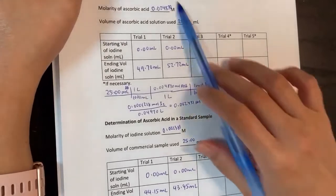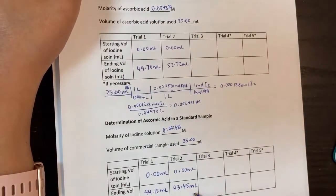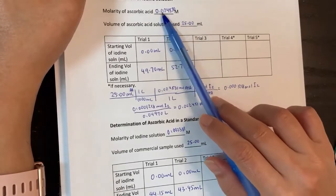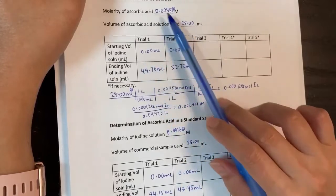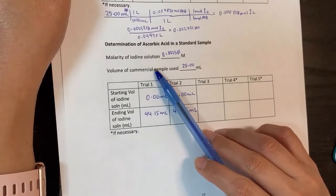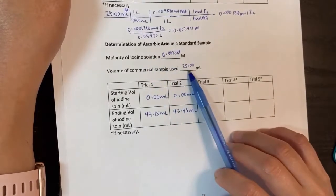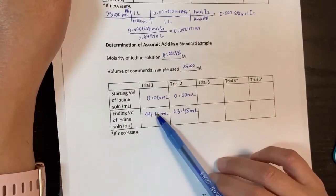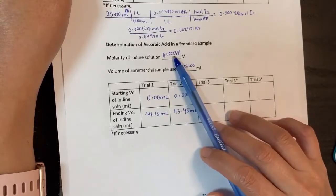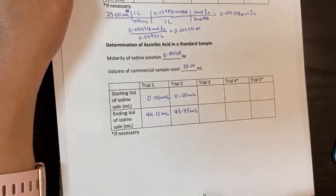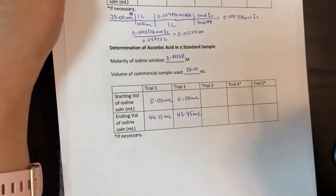Here's where the common mistake happens — everyone wants to follow the same method as before, but you can't. In the first part you used the volume and molarity of ascorbic acid and divided by the volume of iodine. In the second part it's the opposite: apple juice is the unknown, not iodine. You take molarity of iodine times volume of iodine to get moles of iodine, which equals moles of ascorbic acid in the apple juice, then divide by the 25 mL of apple juice.